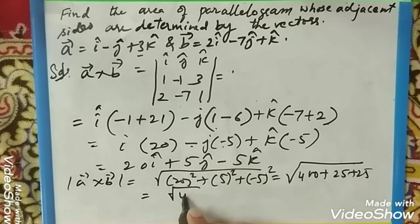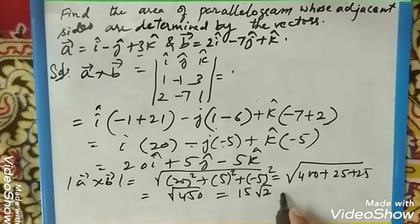If you take the square root of 450 it will be 15√2 square units. Please subscribe to our channel for more videos on the topic of important questions.